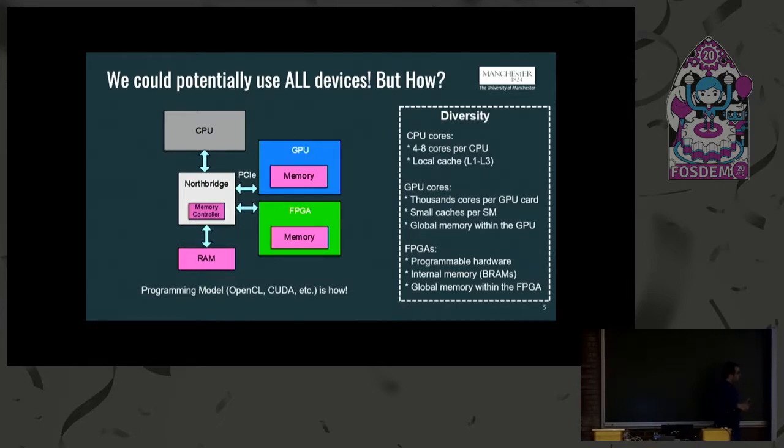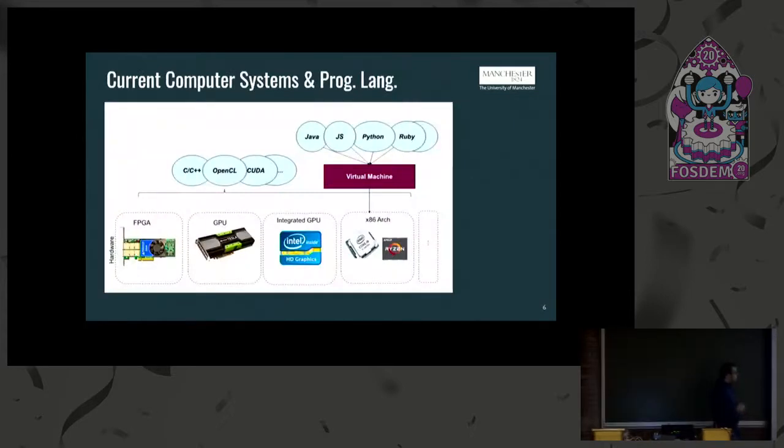Then you execute, you accelerate the data, and then you copy them out to the main memory. And this way the CPU, the GPU, and FPGA look alike. They are just accelerators that process data.